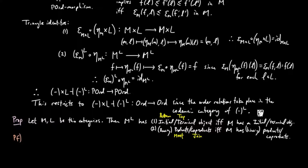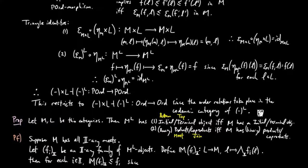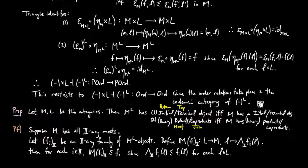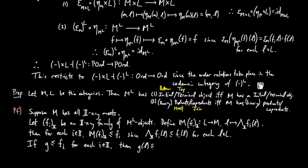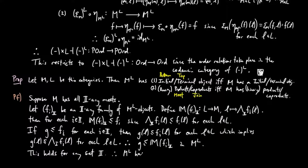For the proof, suppose M has all I-ary meets for some set I. Let F_i be an I-ary family of M^L objects. Define M as the order morphism which takes L to the meet of all F_i(L) in M. Then for each i in I, M ≤ F_i since the meet of F_i(L) over I is less than or equal to F_i(L) for each L in L. If G ≤ F_i for each i in I, then G(L) ≤ F_i(L) for each L in L, which implies G(L) ≤ the meet of F_i(L) over I. Therefore G ≤ M in M^L.